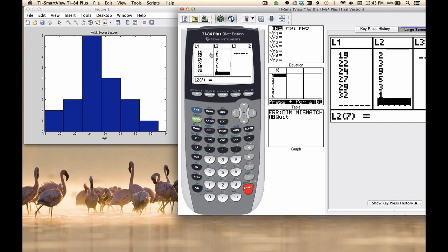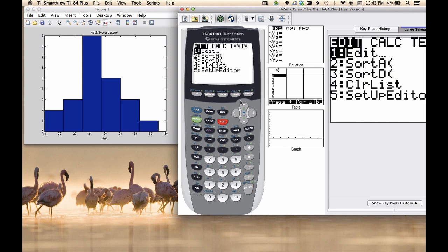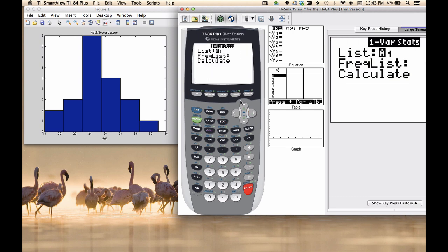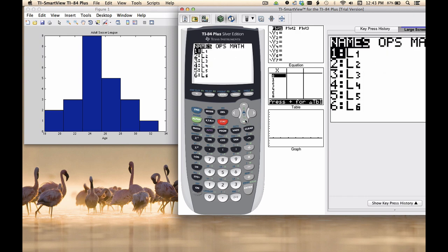So essentially what we're looking at in the TI is a frequency table. Now if we go to calculate one variable stats, the TI knows exactly what to do with this. I do stat, calc, one var stats. But now I'm going to come down and tell it that the frequency list is stored in L2. That's where we put it.